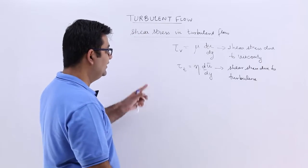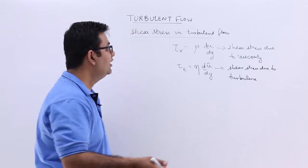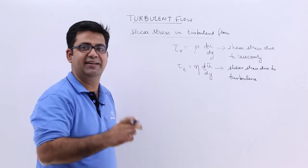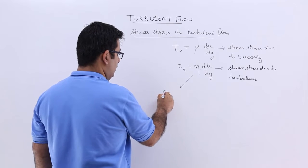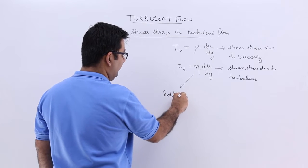In this, mu is the dynamic viscosity, u is the velocity, and y is the distance. Over here, this eta is called the eddy viscosity.